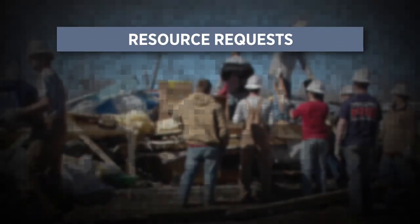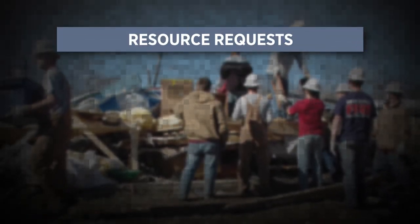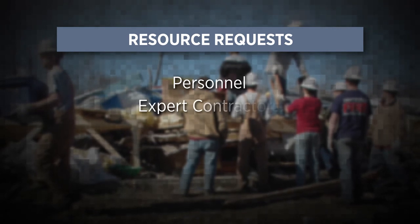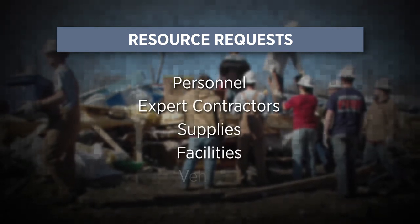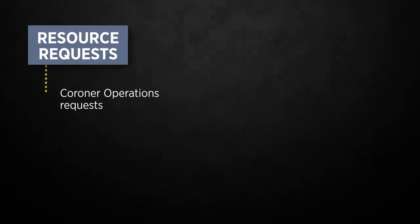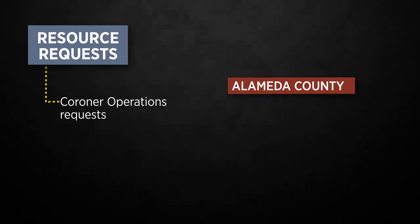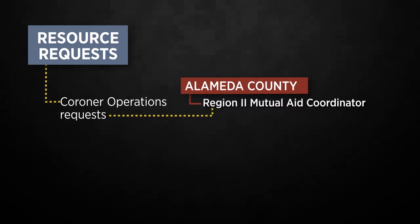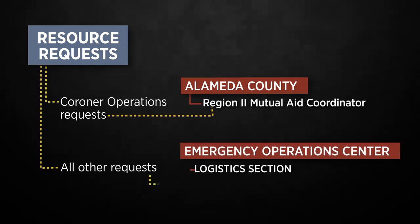Resource requests for management of mass fatality operations typically include personnel, expert contractors, supplies, facilities, and vehicles. Resources for coroner operations such as search and recovery teams will be requested through the coroner's Region 2 Mutual Aid Coordinator in Alameda County, while all other resources will be requested through the EOC Logistics section.